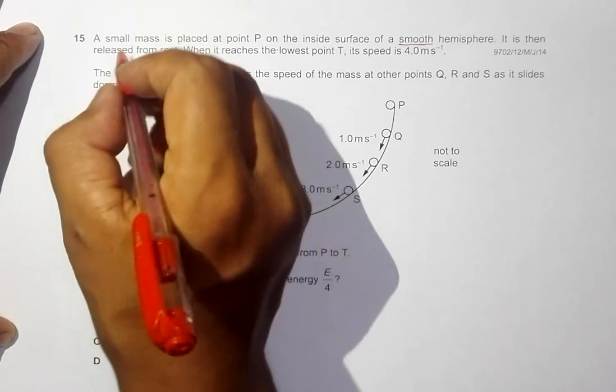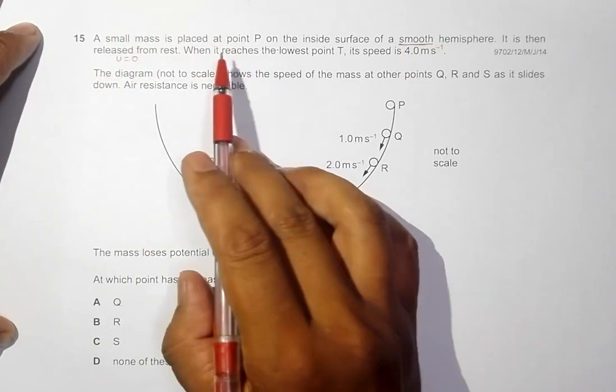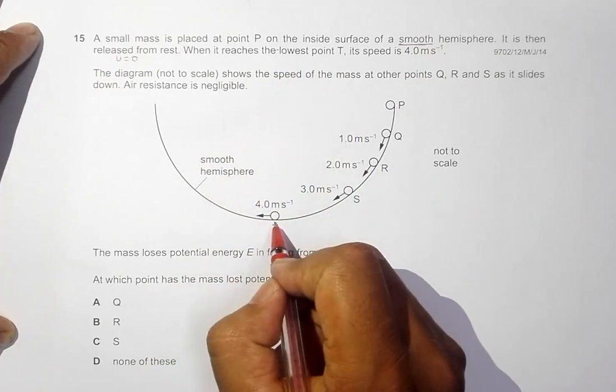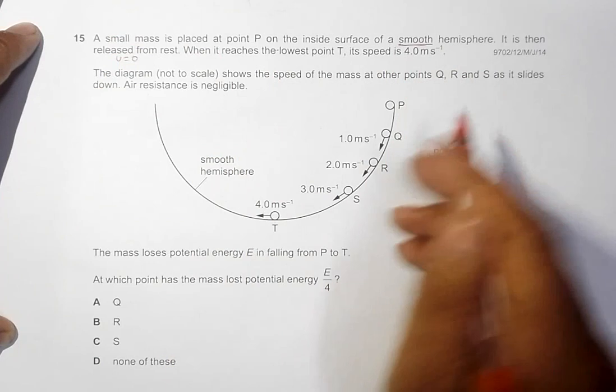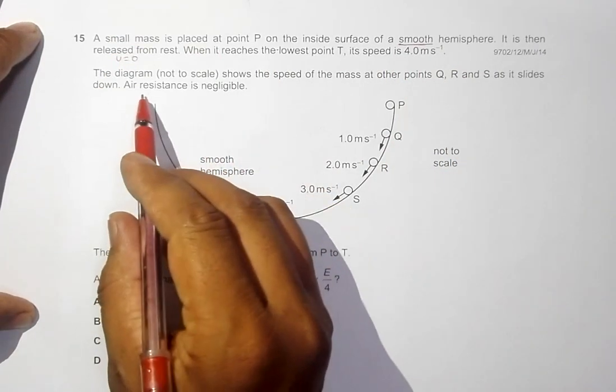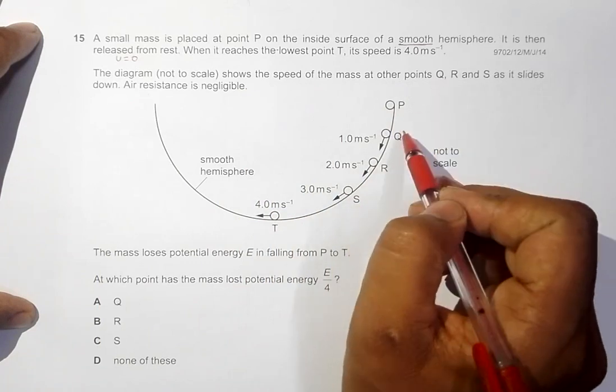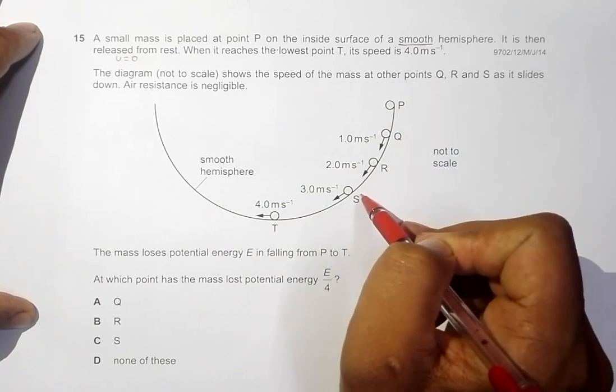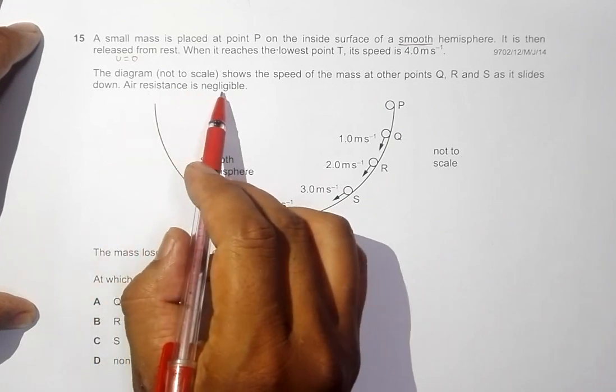It is then released from rest, meaning the initial velocity is equal to 0. When it reaches the lowest point T, its speed is 4 meters per second. The diagram, not to scale, shows the speed of the mass at other points Q, R, and S as it slides down.